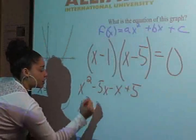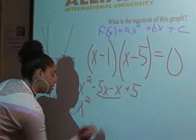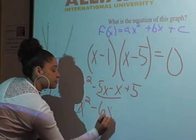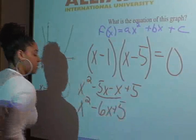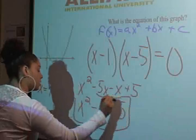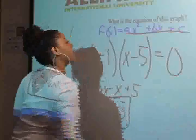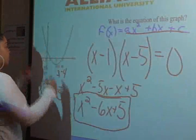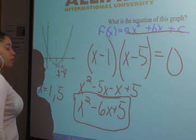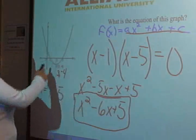Go ahead and combine these right here. That gives us x squared minus 6x plus 5. I want to make sure that this equation right here is similar to the formula up here, and it is. And it is positive because the parabola does open up. So this is our equation for this graph.